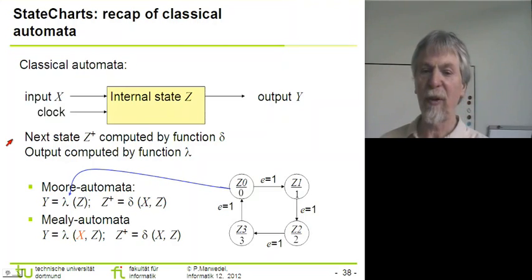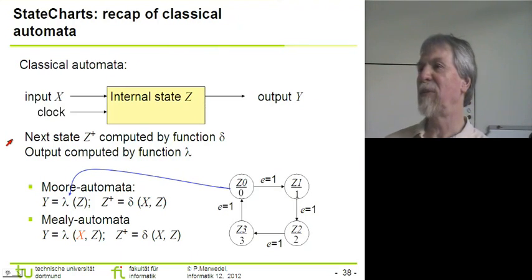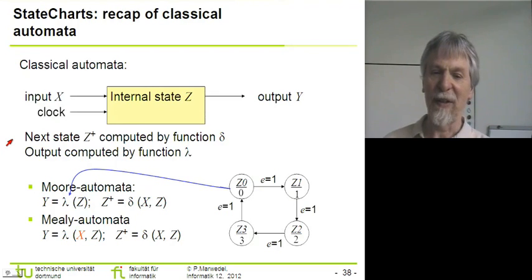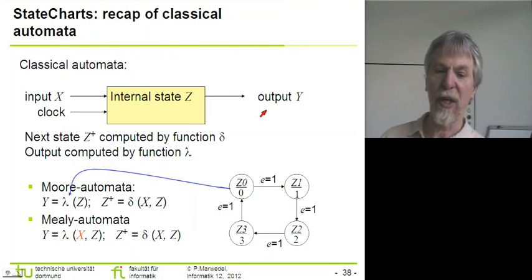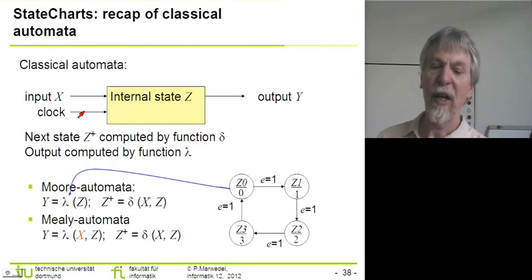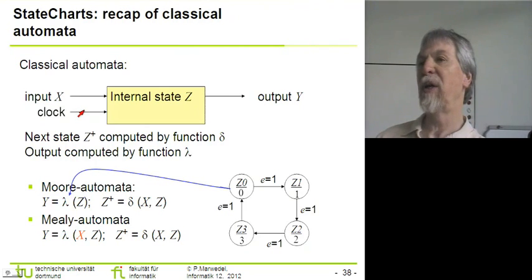I assume you got an introduction to finite state machines somewhere, but to be sure you remember enough, I have this slide. Classical automata have an internal state Z, an output Y, an input X, and in most cases we implicitly assume the presence of a clock signal.